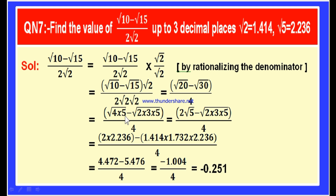We know that 20 can be written as 4 into 5, and 30 can be written as 2 into 3 into 5. Square root of 4 into 5 is square root of 4 into square root of 5, which is 2 into root 5. And root 30 is root 2 into root 3 into root 5. Now let us substitute the values: root 2 is 1.414, root 3 is 1.732, and root 5 is 2.236.